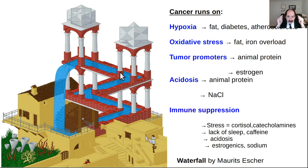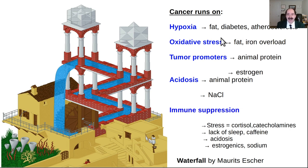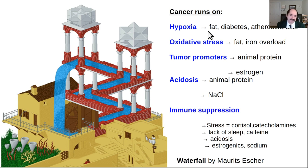The smart thing is: what starts the whole process? The big one is hypoxia. What's the major cause of hypoxia? Fat. So fat is obviously a problem. Diabetes leads to hypoxia. Atherosclerosis leads to hypoxia. Oxidative stress is a significant contributor to the pathologic cascade of cancer. What causes oxidative stress? Obviously fat, especially PUFAs. Diabetes - a lot of fat will cause that. Omega-3s cause that. Also, saturated fat is really significant for worsening insulin resistance and diabetes. Iron overload contributes to oxidative stress.